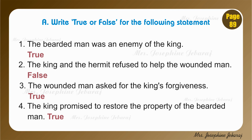Number 2. The king and the hermit refused to help the wounded man. False — the king and the hermit helped the wounded man voluntarily. Number 3. The wounded man asked for the king's forgiveness. True, because the wounded man asked for the king's forgiveness the next day. Number 4. The king promised to restore the property of the bearded man. It is true — the king not only forgave the bearded man but also promised to restore his property and send his doctors to treat him.